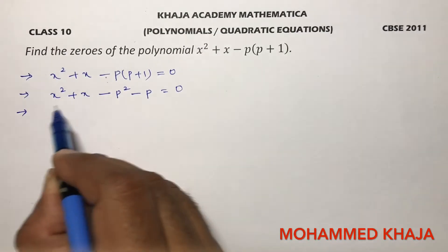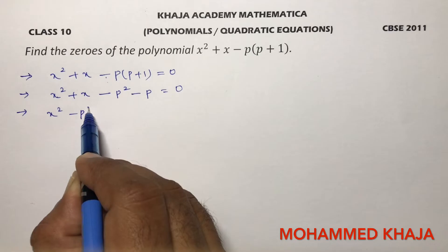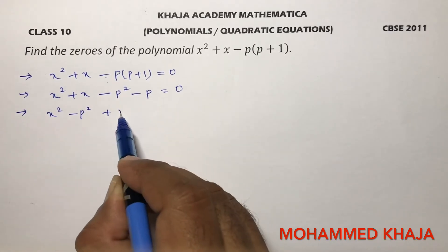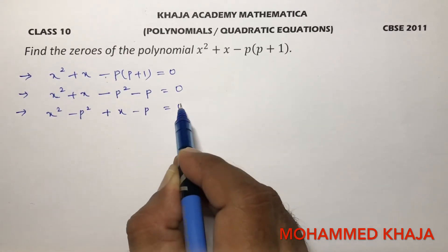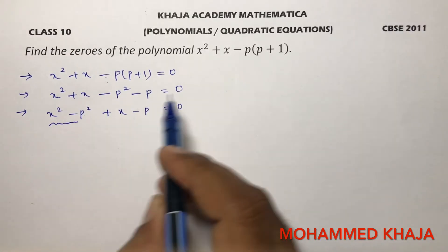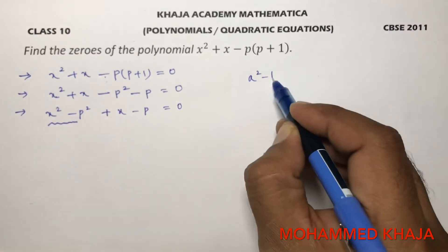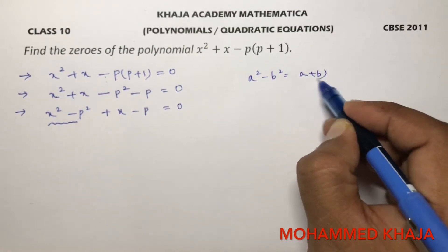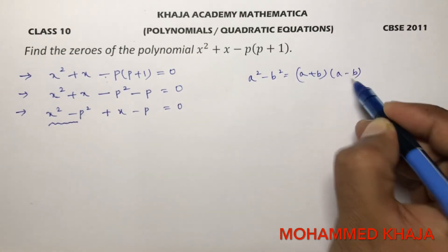Now write square terms together like x squared minus p squared plus x minus p equals 0. This one is in the form of a squared minus b squared. So a squared minus b squared is a plus b times a minus b.